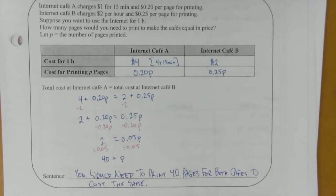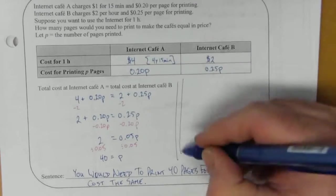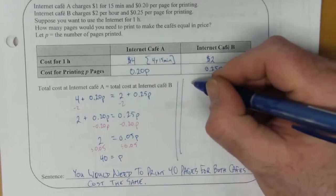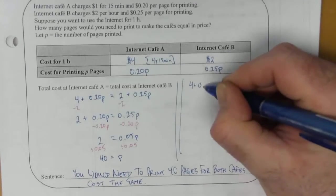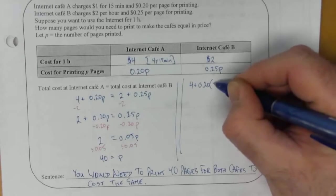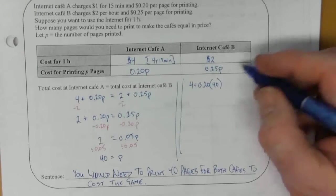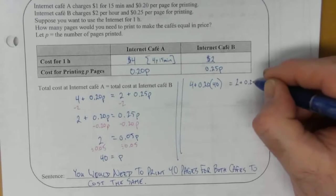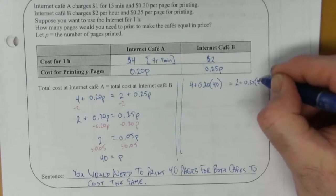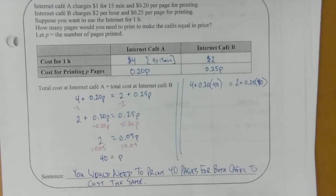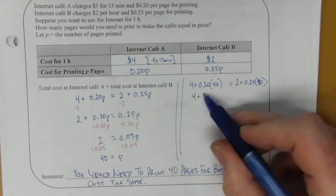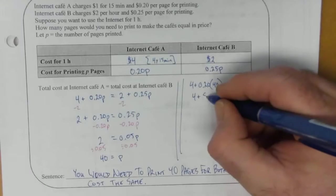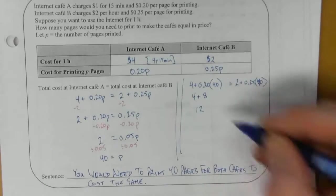Now we should do a double check as well. So we've got 4 plus 0.20P. P we said was 40. That's one side. The other side is 2 plus 0.25P which we said was 40. Let's calculate that out. So this is 4 plus 0.2 times 40 is 8. So that equals 12.